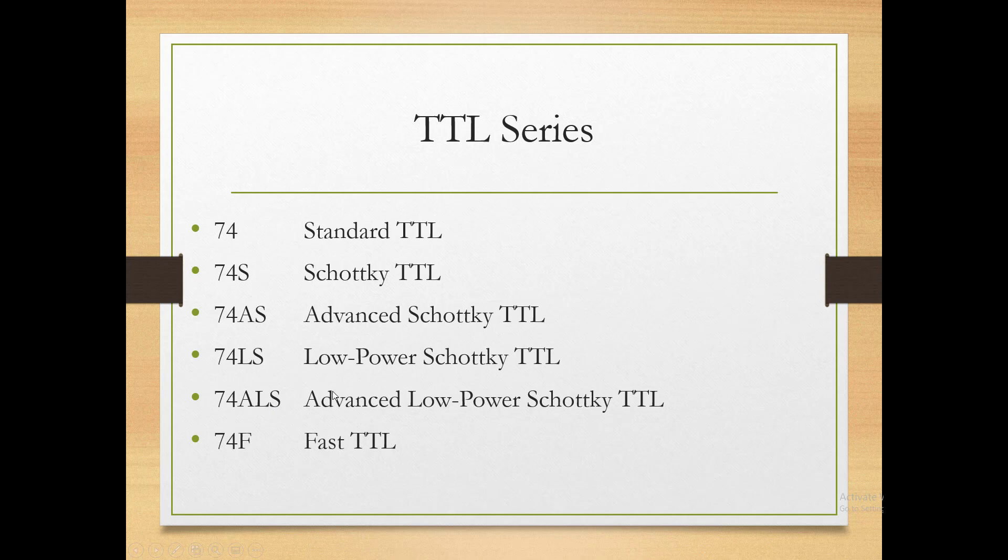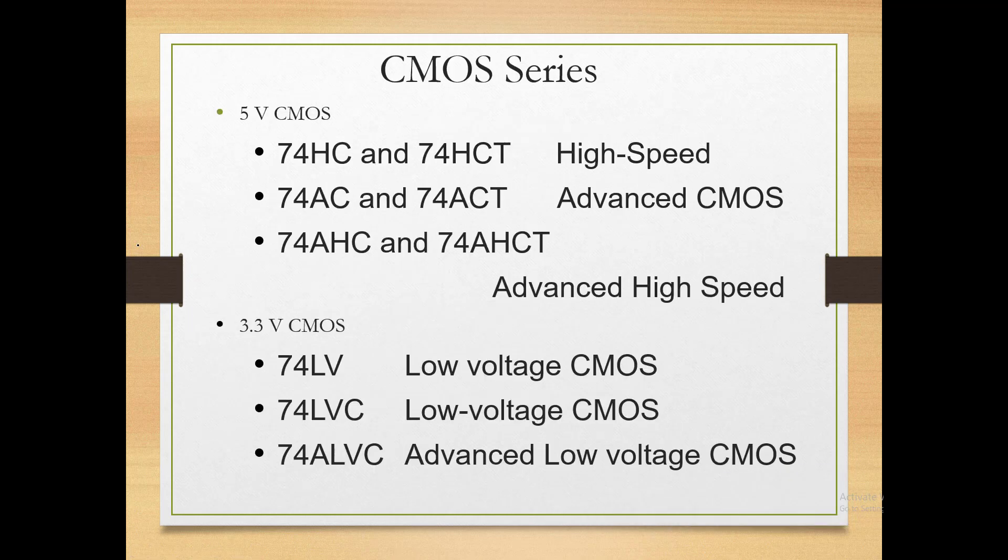Advanced Low Power Schottky TTL is widely used. Now the CMOS series — in the CMOS series there are two sub-series: 5-volt CMOS and 3.3-volt CMOS. The 3.3-volt CMOS is the newer series with fast switching speed and low power dissipation compared to the 5-volt CMOS series.